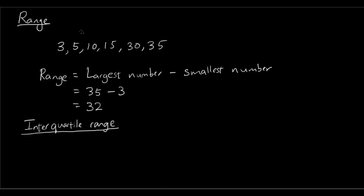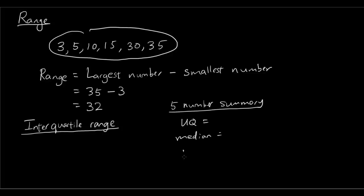So the five number summary of this group of data - we already have the largest number and the smallest number, so we're not going to do them again. We need the upper quartile, the median, and the lower quartile.